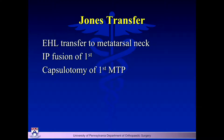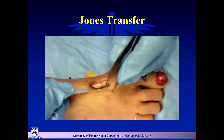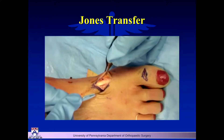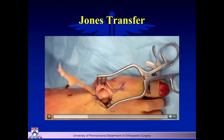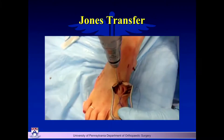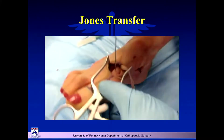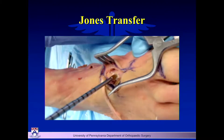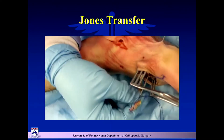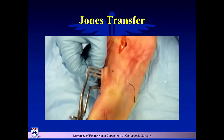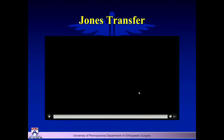We transfer the EHL to the neck of the metatarsal and do an IP fusion to correct the toe deformity, sometimes adding a capsulotomy. You isolate the extensor hallucis longus tendon, release it distally, pull it back and transfer it through the neck of the metatarsal. You can go through-and-through from medial to lateral, or use a suture anchor and interference screw — though suture anchors can cost as much as $700, so I often just go through-and-through.